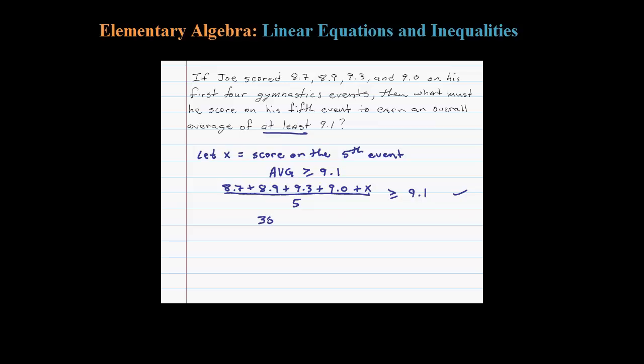Now when I add those numbers up, I get 35.9 plus the X, divided by the 5, supposed to be greater than or equal to 9.1. I need to take care of this 5.